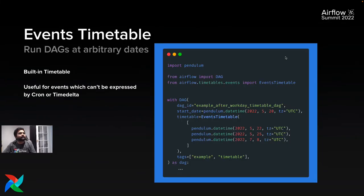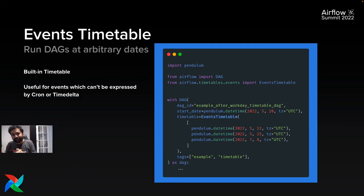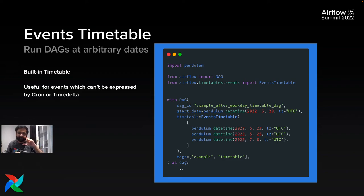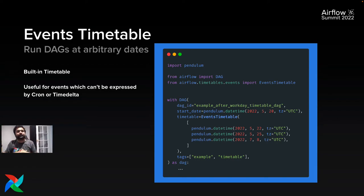Airflow 2.2 introduced timetables for richer schedule intervals, but writing a custom timetable requires internal Airflow expertise. Colin from Astronomer contributed the Events Timetable for use cases where you want to run a DAG on arbitrary dates that can't be expressed via cron or timedelta — for example, a sports event like FIFA, Wimbledon, or IPL. You can just specify those specific dates using the Pendulum library and pass them to your DAG.